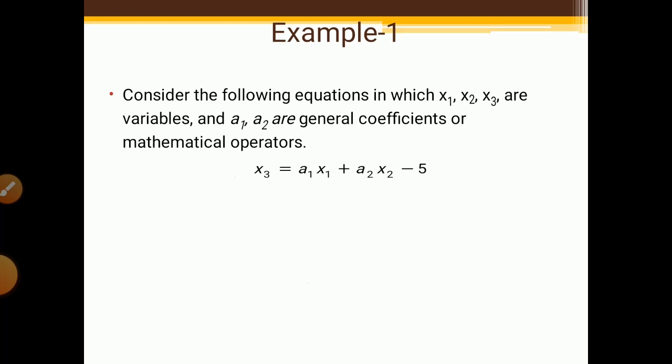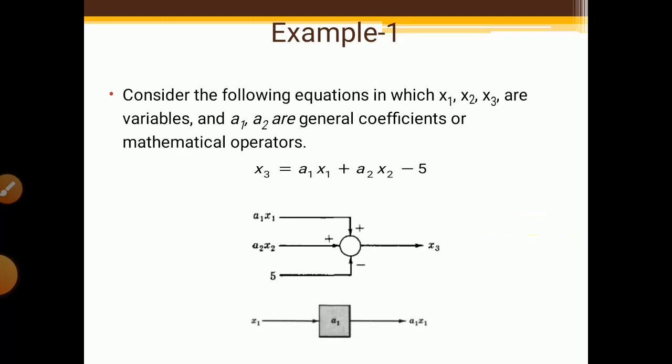Example: consider the equation X3 = A1·X1 + A2·X2 − 5, where X1, X2, X3 are variables and A1, A2 are general coefficients or mathematical operators. We represent this using one summing point with three inputs: A1·X1 with a positive sign, A2·X2 with a positive sign, and 5 with a negative sign. Adding all three gives the required output X3 = A1·X1 + A2·X2 − 5.